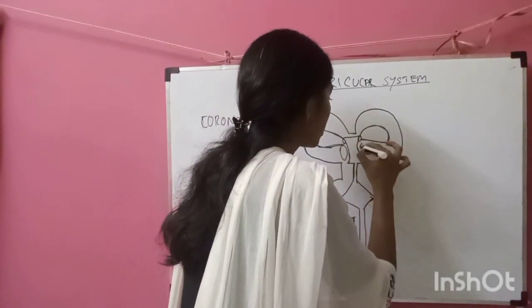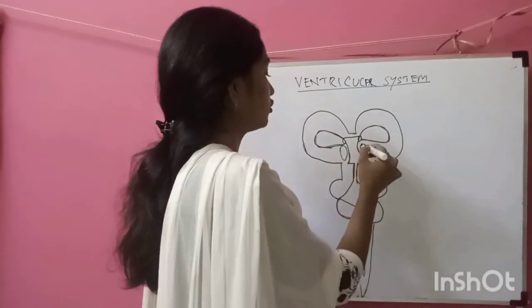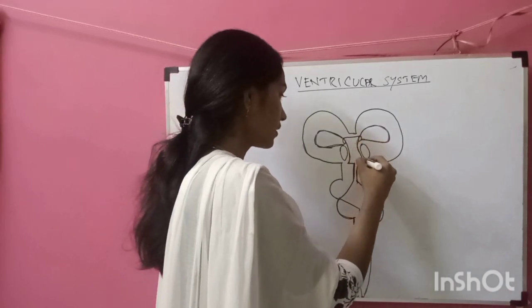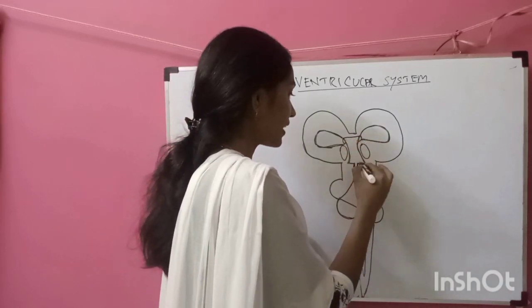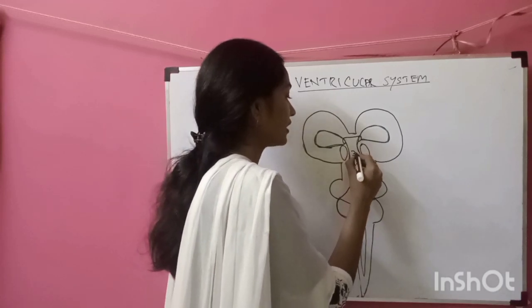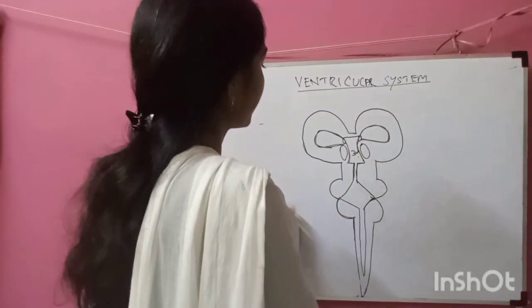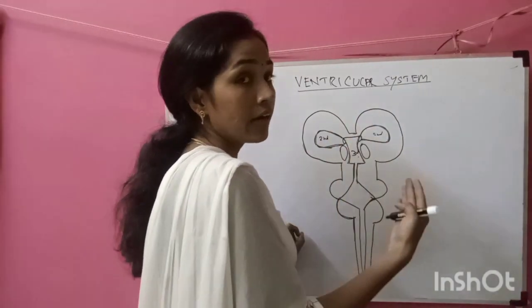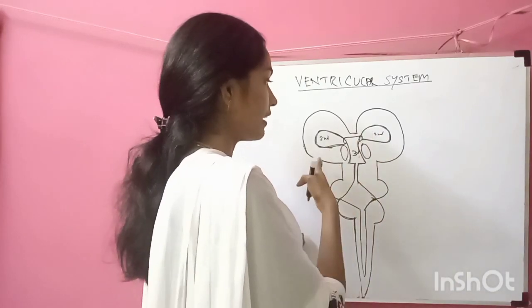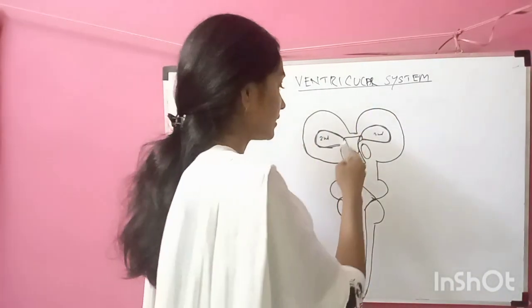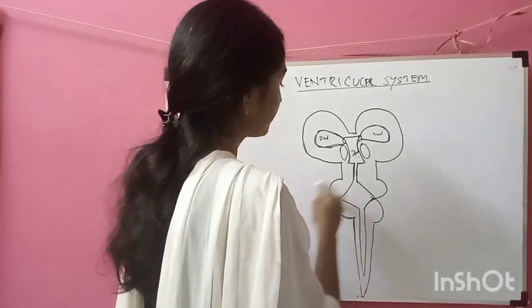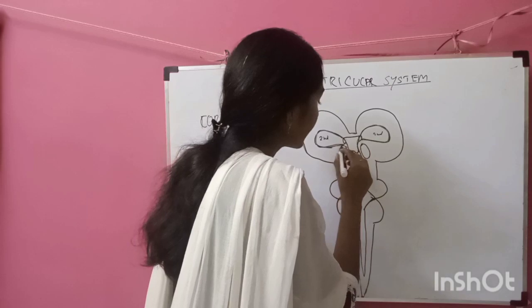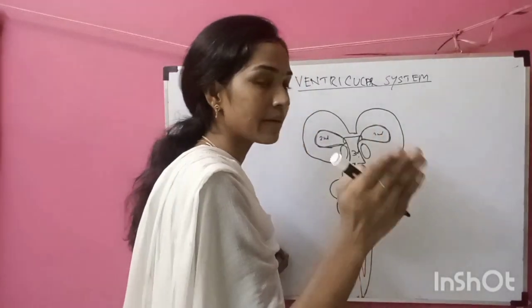These are the two thalami just above the midbrain. In between the thalamus there is a ventricle called the third ventricle. The two lateral ventricles — right lateral ventricle and left lateral ventricle — are the first and second ventricles. The third ventricle lies between the two thalami, in the region called the diencephalon.